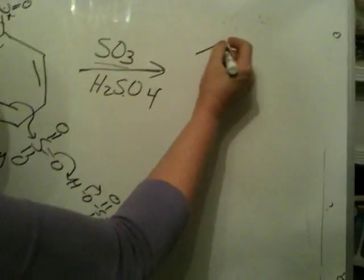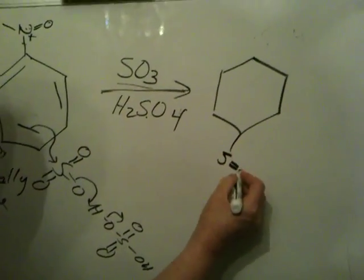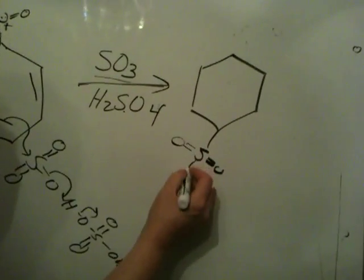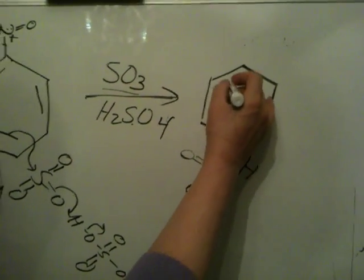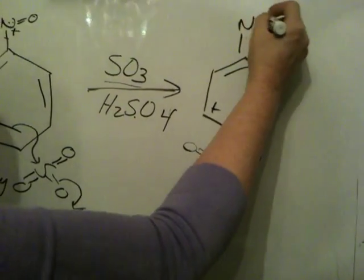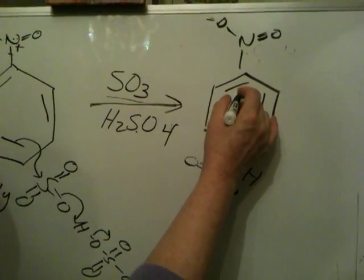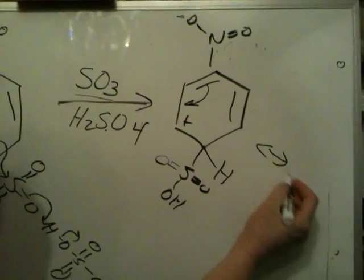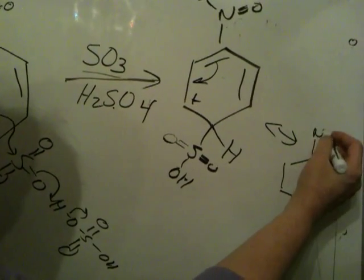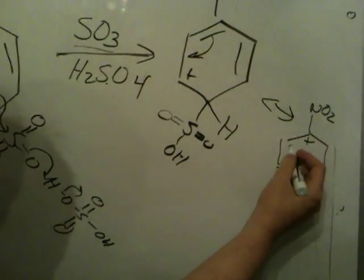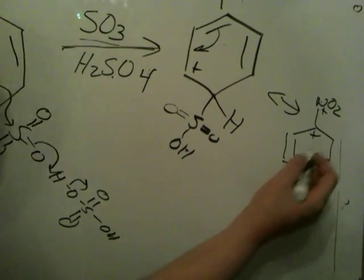The result will be the following resonance forms, which we really want to consider very carefully. I get a plus here. We can draw other resonance forms. Now look at this. This is bad. The plus charge is sitting at the site where the electron withdrawing group is sitting.